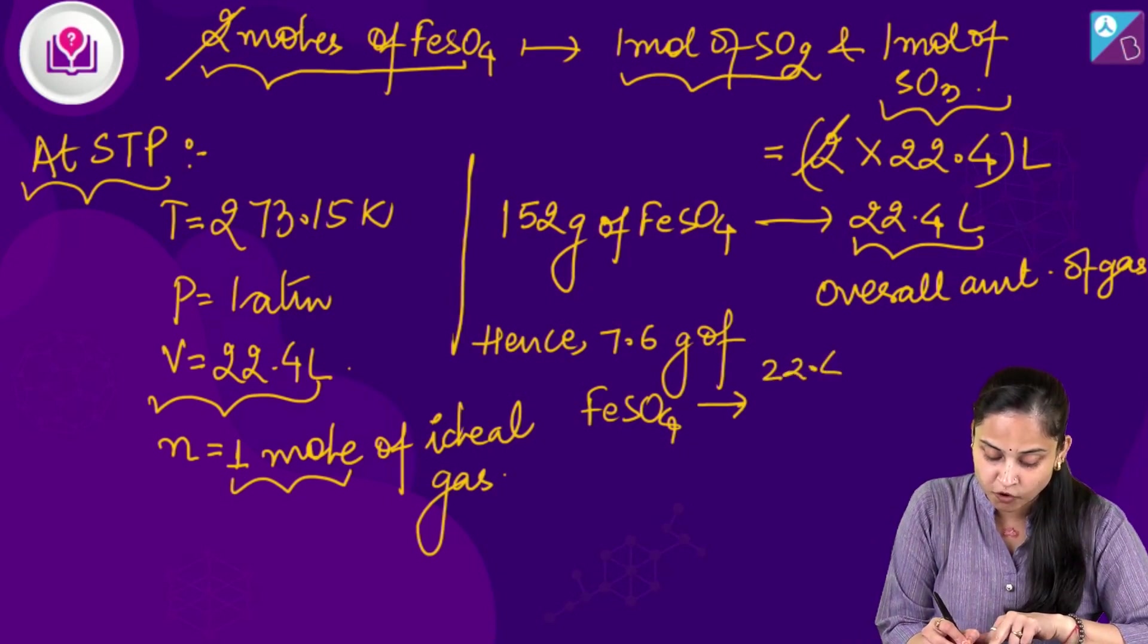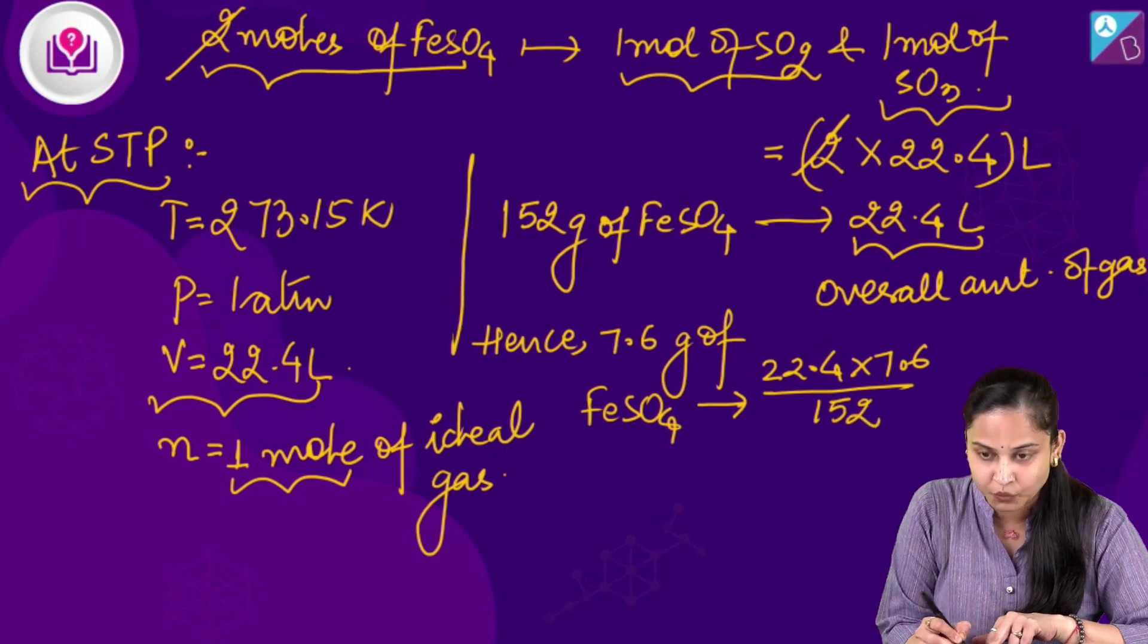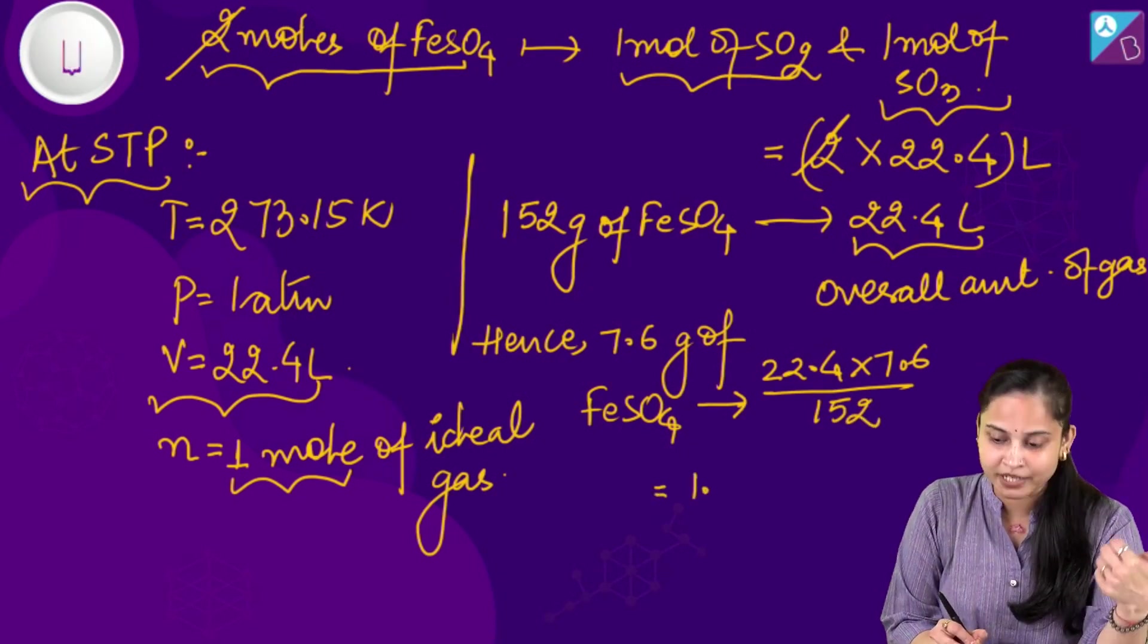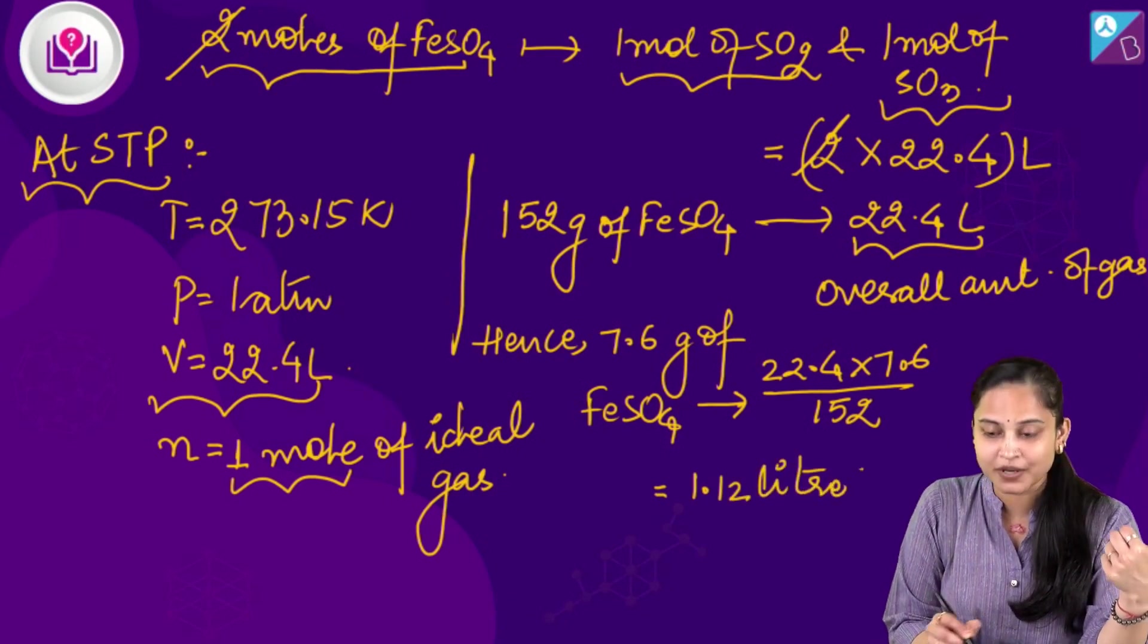And it comes out to be 1.12 litres. So this 1.12 litres is basically the total volume of the gases that is coming out in the product side.